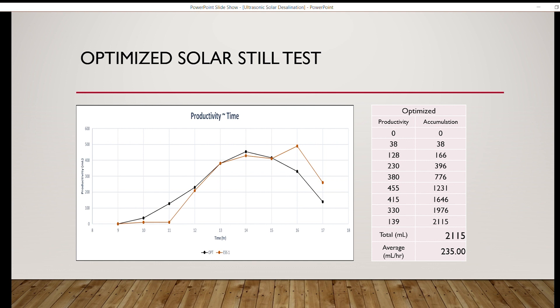A total of 2.115 liters was produced, which is not as good as the conventional solar still. However, that is due to the effect of the weather on the results of the tests, in the last two hours.